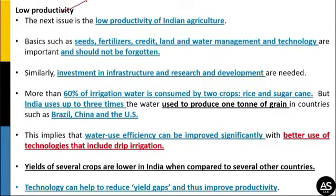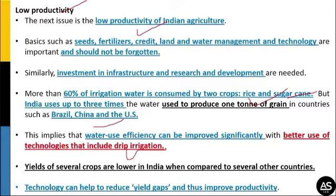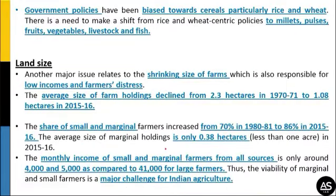The second issue highlighted is low productivity in Indian agriculture. Basics such as fertilizer, seeds, credit, land, water management, and technology are important and should not be forgotten. Investment in infrastructure and research and development is critical. More than 60% of agricultural water is consumed by just two crops — rice and sugarcane — and India uses up to three times the water used to produce one ton of grain compared to countries like Brazil. We must develop mechanisms like drip irrigation to use water more prudently, and address the technology gap causing lower crop yields.